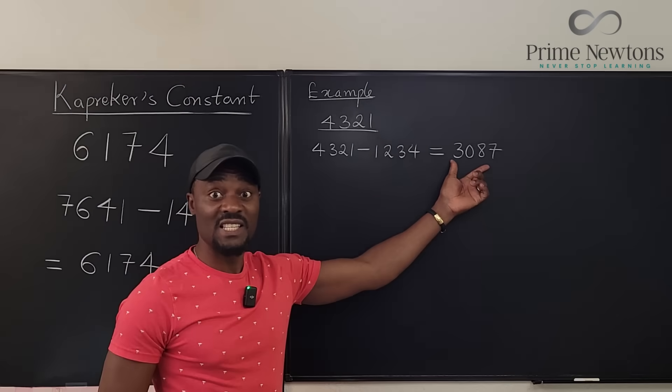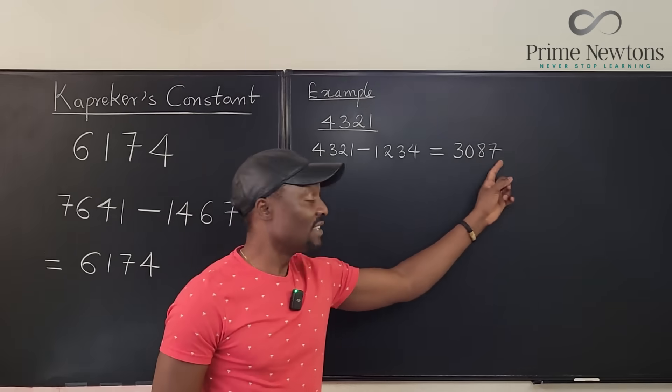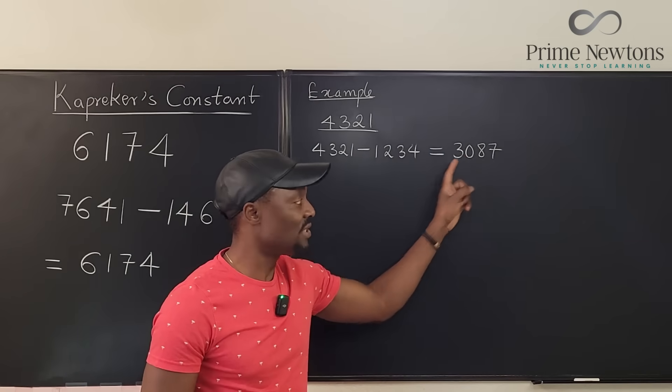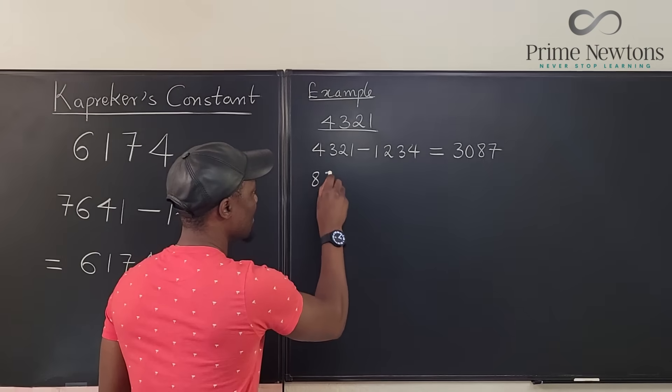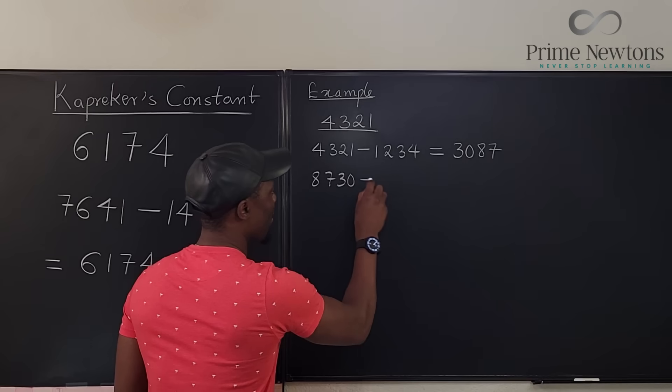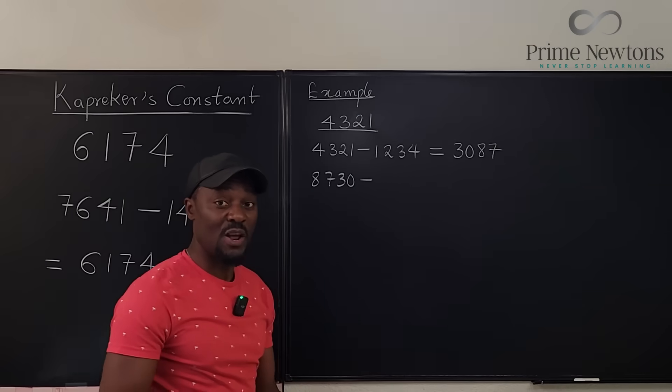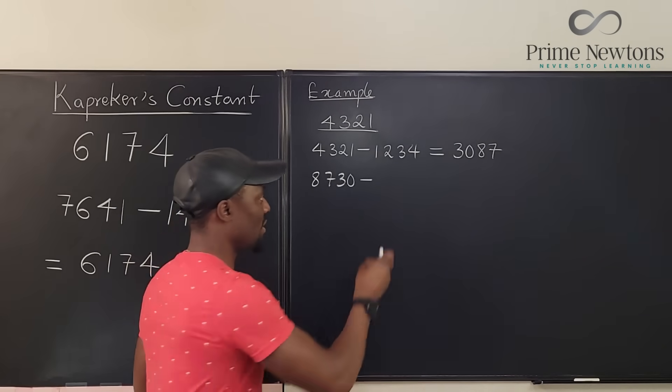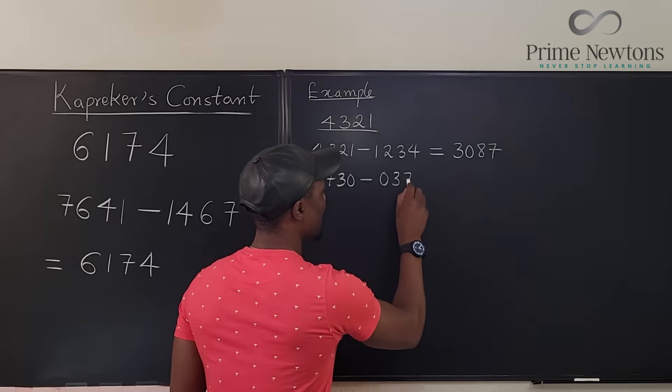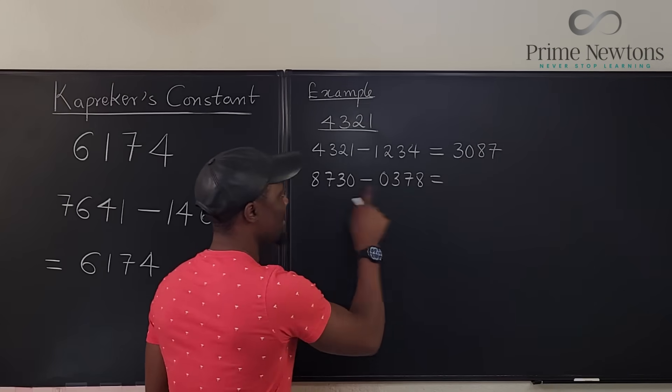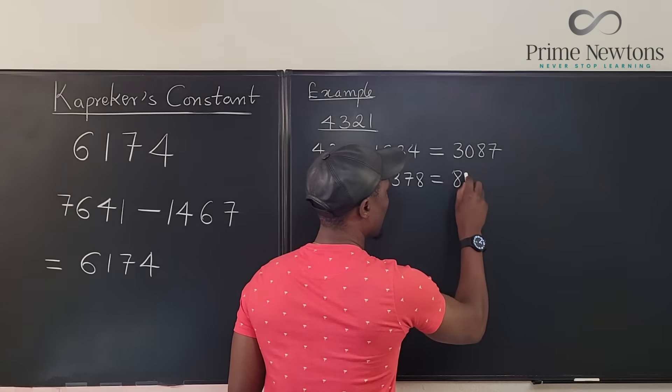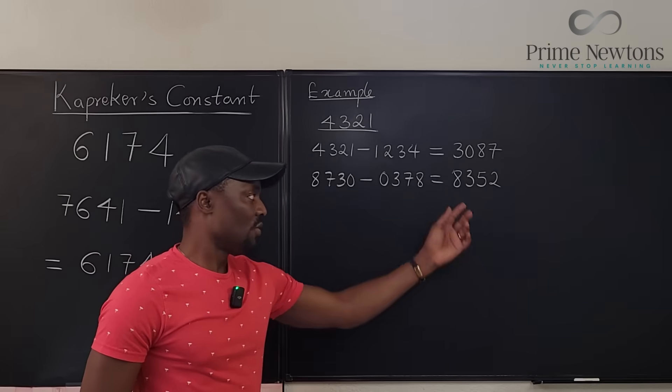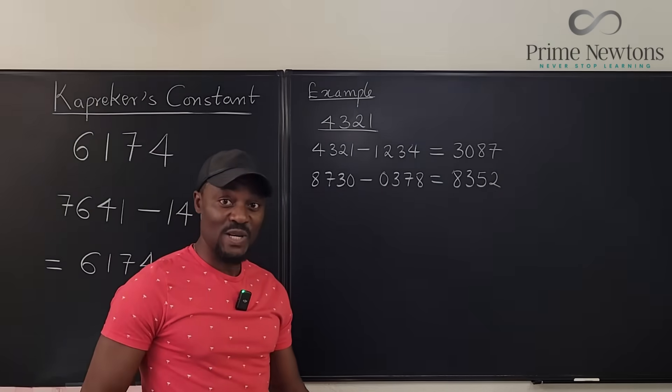So I'm going to start with this again. I'm going to find the biggest number I can get from this. It's going to be 8,730. So I have 8,730 minus the smallest number. Remember, I need four digits. So I'm going to arrange it in this order, which is going to be 0,378. What's going to be this difference? So we've got 8,352. We do it again.